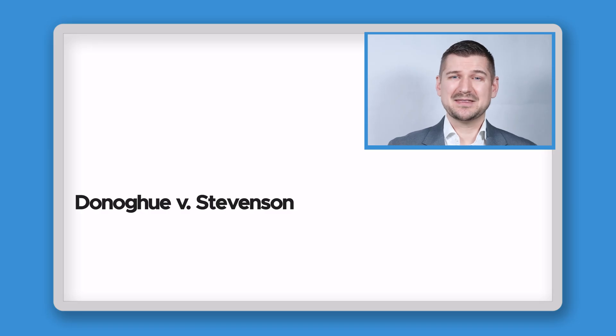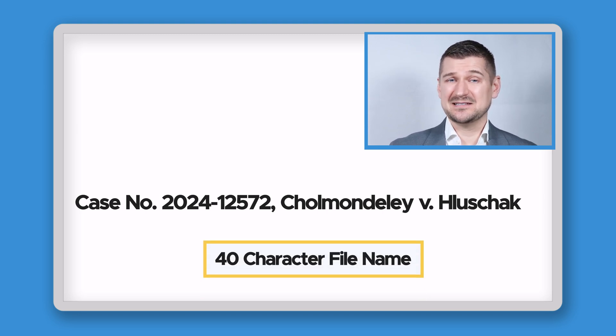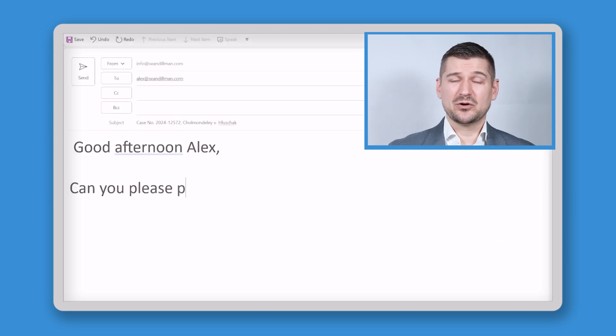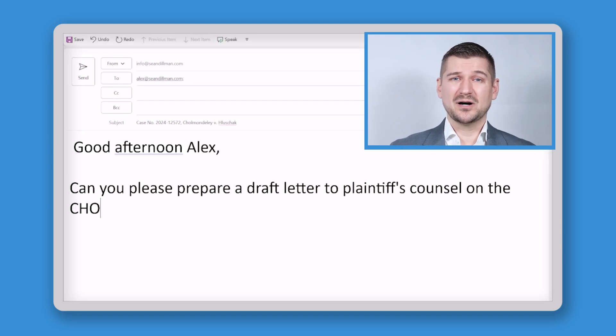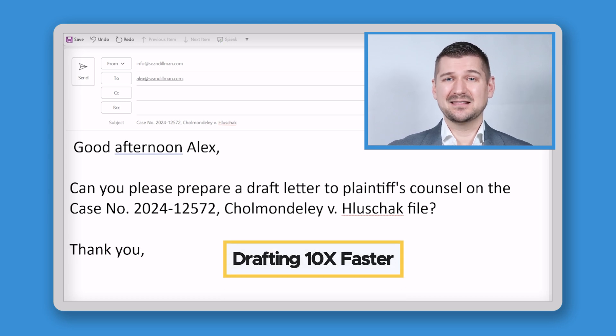You may be thinking that the file name "Donahue v. Stevenson" isn't so bad, but what if the file name was something longer and more complicated? This file name contains 40 characters and isn't very easy to spell. If I instead use an auto-correction shortcut like "CHO_," I can use four characters to produce 40, which means I'm drafting this text in a tenth of the time and I don't need to worry about whether it's spelled correctly. Time is money, and increasing precision while simultaneously reducing the time it takes to draft increases your potential to get more work done while ensuring high quality work product. It's a win-win.